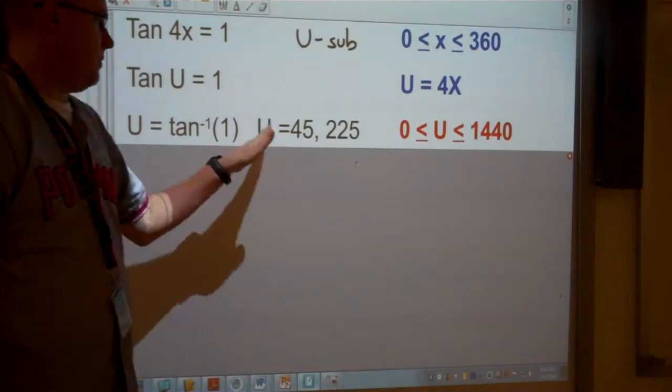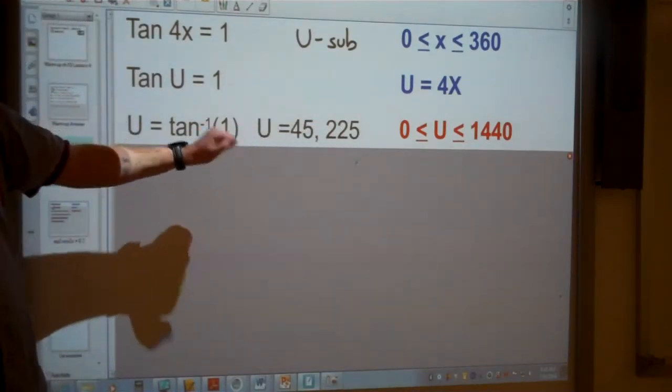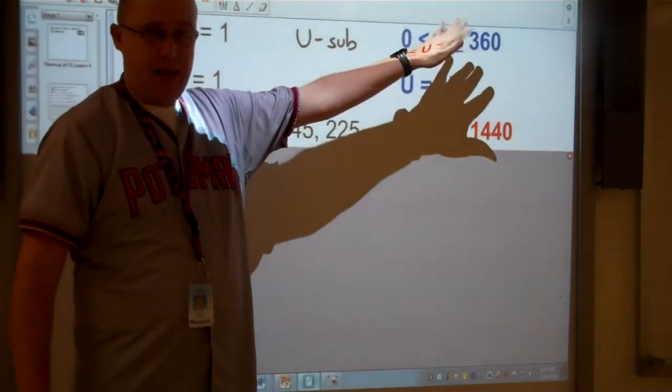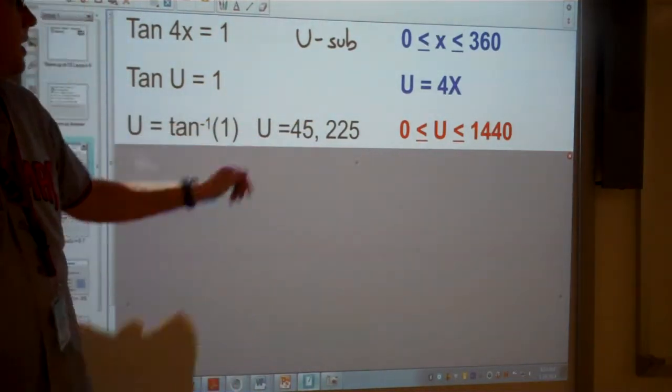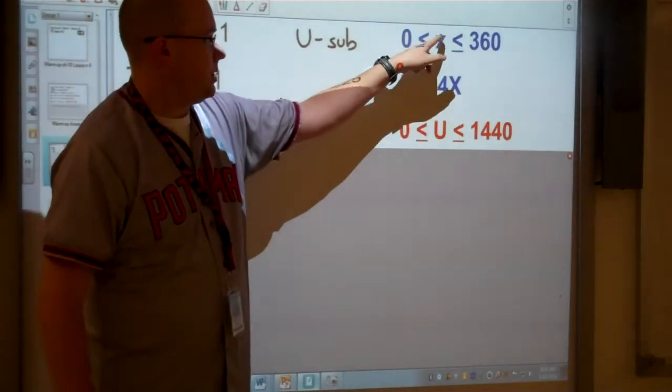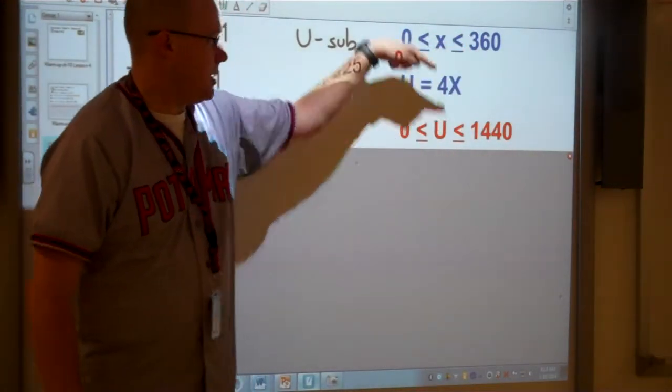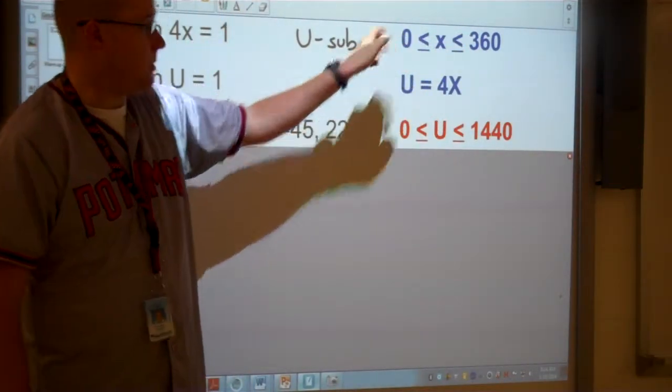Now we've got to be very careful here. We're answering now in terms of U, but our original question was in terms of X. So not only do we have to solve this question, we have to solve it for a new set of limits. So what we're going to do is substitute our X values here and here into the formula that we did for our U substitution.